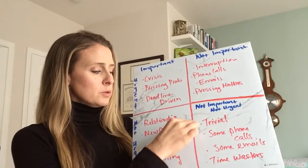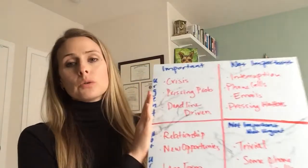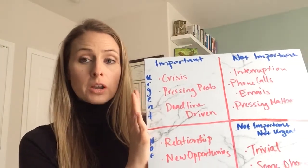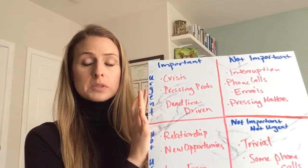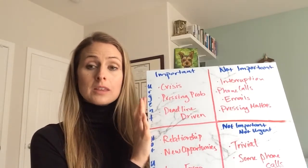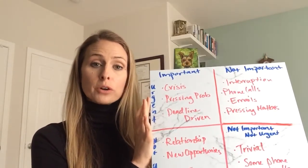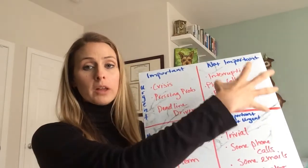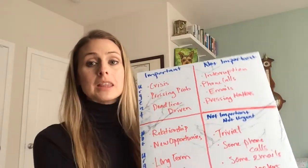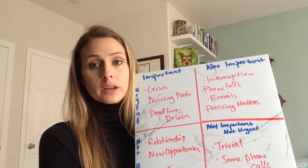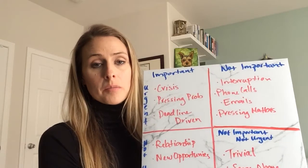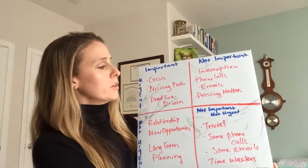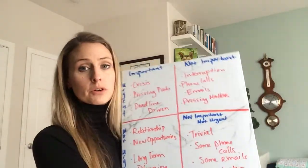As you can probably guess, we need to tackle quadrant one first — the important and urgent items. The nice thing about tackling this quadrant first is that after we have completed these tasks, we're more likely to complete tasks in the other areas that we want to tackle. So important and urgent is probably where we want to complete first.